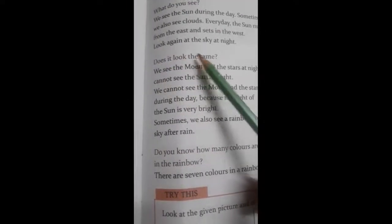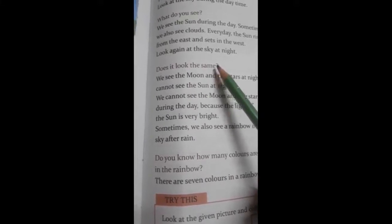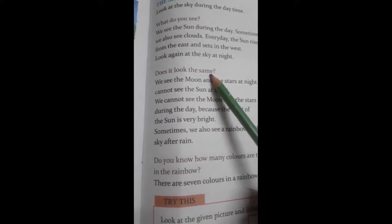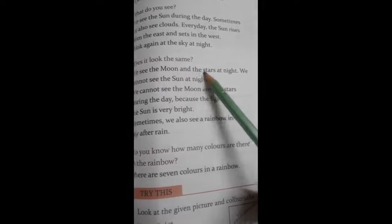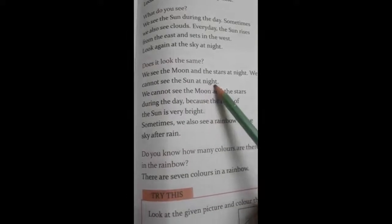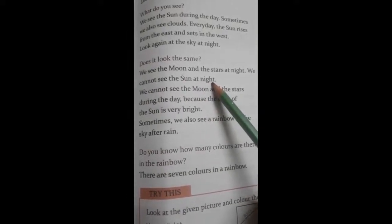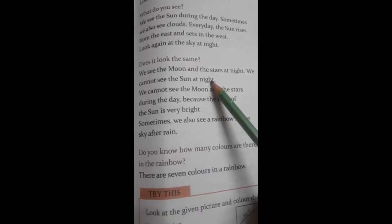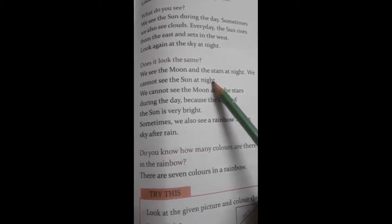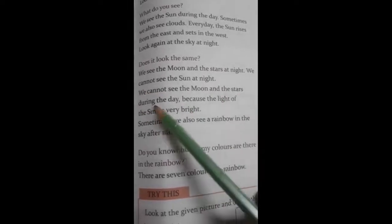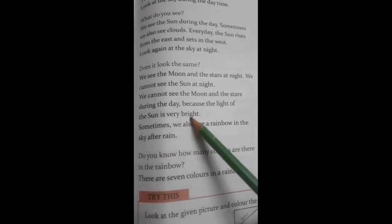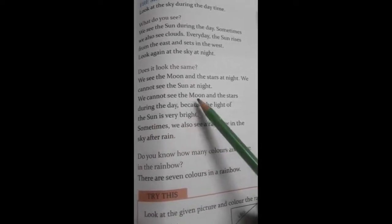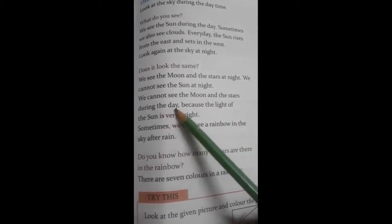Does it look the same? So children, day and night look the same? No. Let's see. We see the moon and the stars at night. We cannot see the sun at night. Can we see sun at night? No. We can see moon and the stars at night. We cannot see the moon and the stars during the day. Why? Because the light of the sun is very bright. That's why we cannot see the moon and the stars during the day.